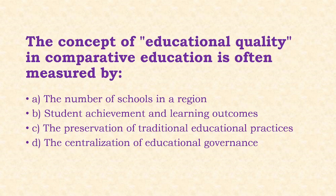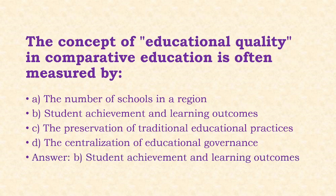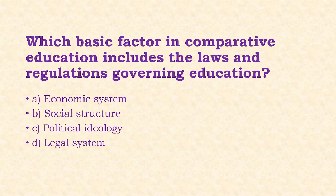Next: The concept of educational quality in comparative education is often measured by student achievement and learning outcomes. Options: number of schools in a region; student achievement and learning outcomes; preservation of traditional educational practices; centralization of educational governance. The answer is option B.